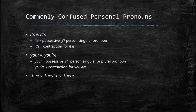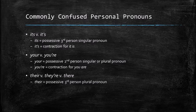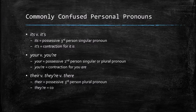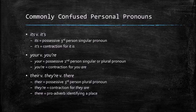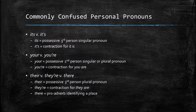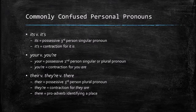Finally, their versus they're versus there. T-H-E-I-R is your possessive third-person plural pronoun. T-H-E-Y apostrophe RE is a contraction for 'they are.' And T-H-E-R-E is what we call a pro-adverb, and it identifies a place — like 'over there,' 'go over there,' there is a place, that sort of thing.